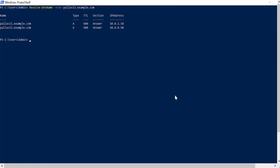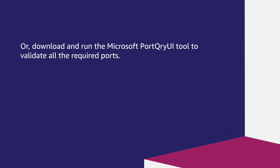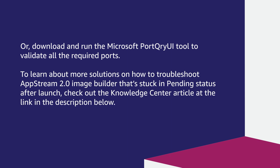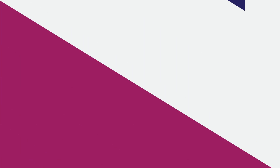From the same PowerShell window, run the Resolve-DnsName command to confirm that you can look up the domain name, or download and run the Microsoft Port Query UI tool to validate all the required ports. To learn about more solutions on how to troubleshoot an AppStream 2.0 image builder that's stuck in pending status after launch, check out the Knowledge Center article at the link in the description below. Thanks for watching and happy Cloud Computing from all of us here at AWS.